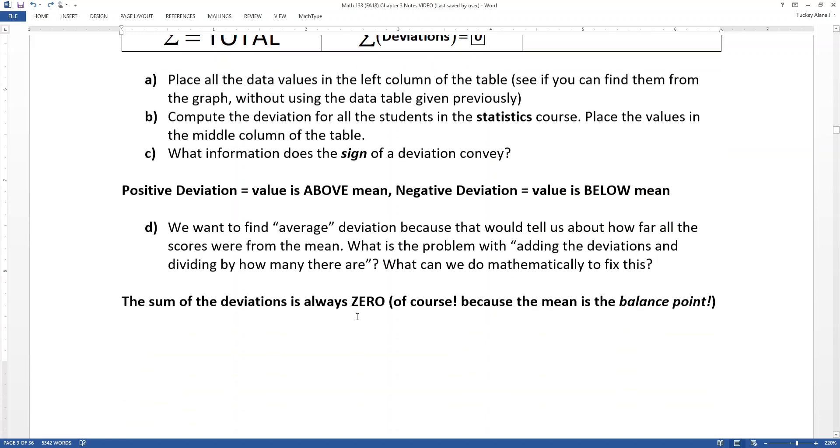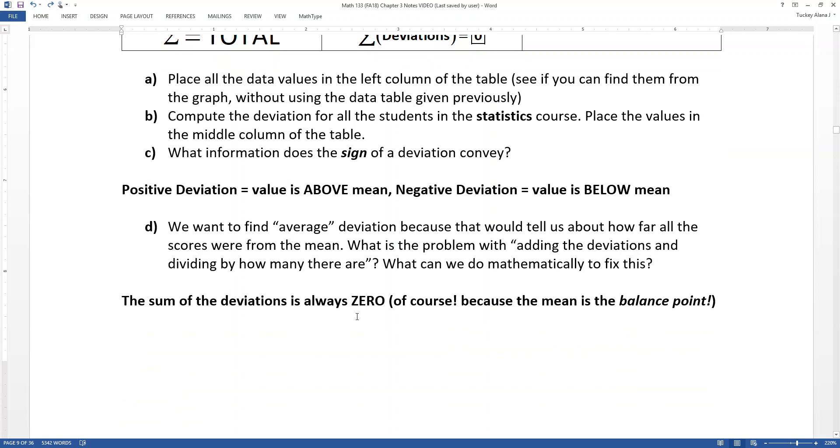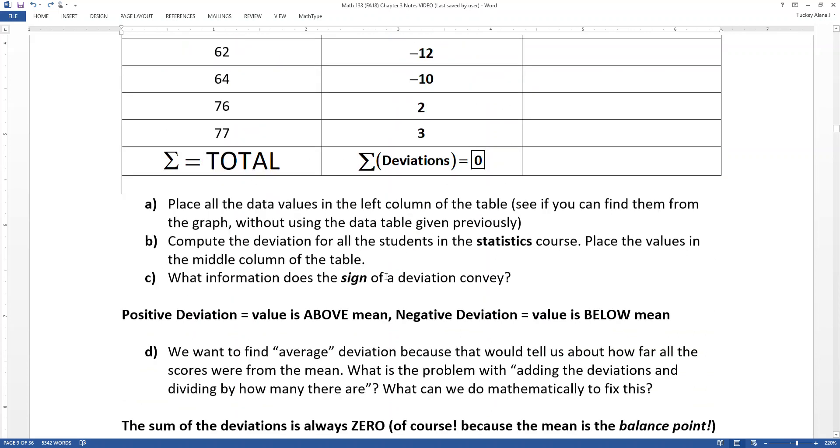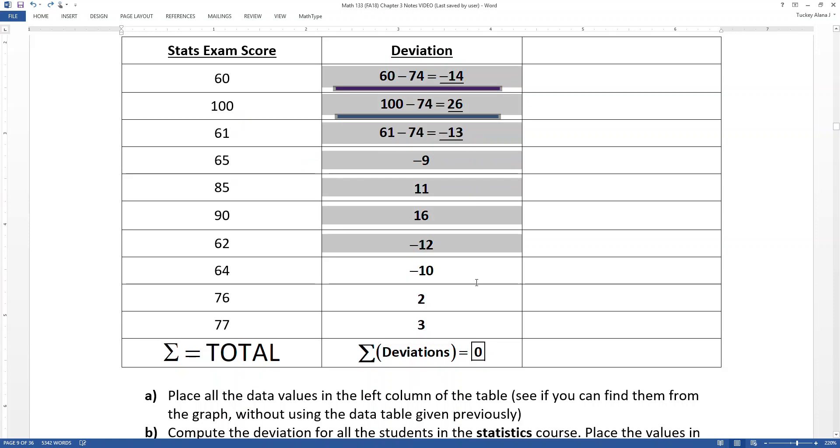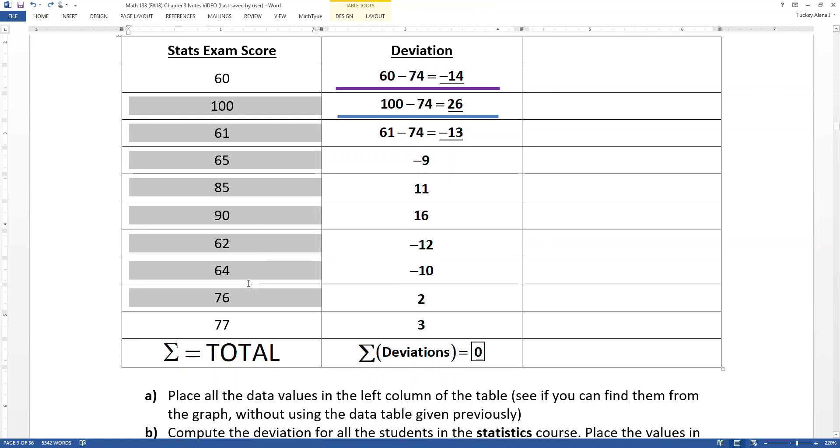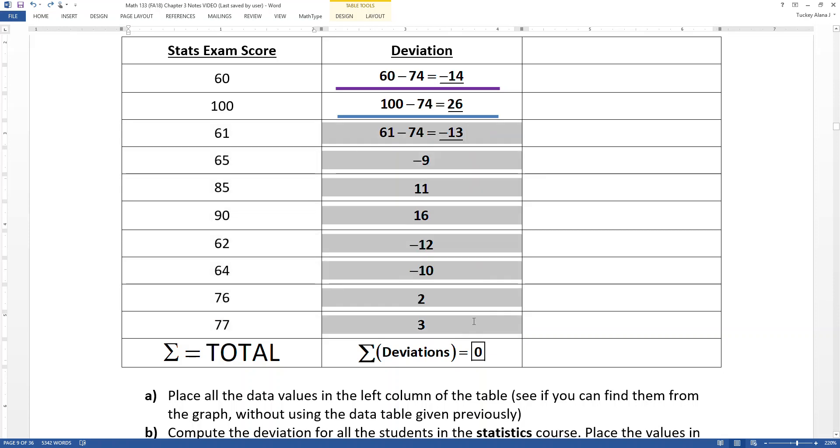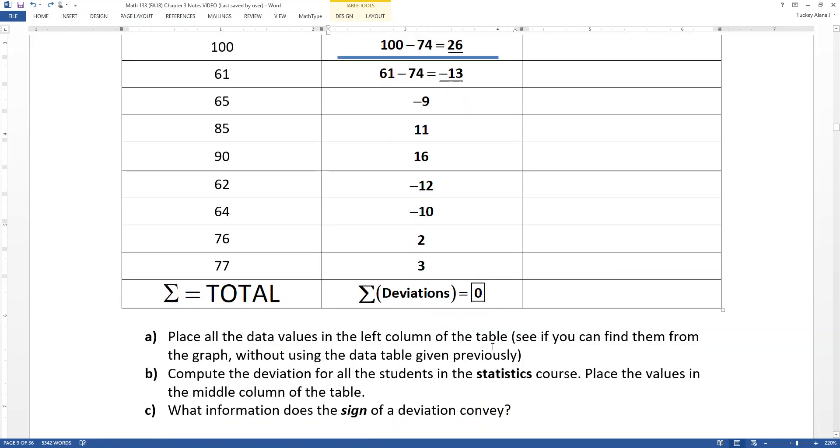Hmm, that puts us in a little bit of a pickle. This is what we want—we wanted the deviations, these numbers right here in this column. They're a good measure of what's going on in the interior, what's happening to all these middle points in between the min and the max. This is going to be a good number but we can't get what we want out of it because if we want to try to add them up and divide by how many there are, we're always going to get zero. Aha.